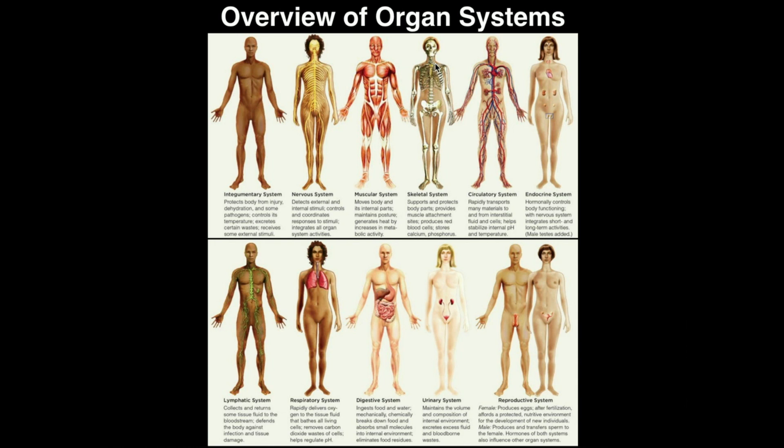The rest of these systems are covered in the second semester of this course. Here's the circulatory system, which is mainly involved in transporting nutrients of all kinds — and wastes — throughout the body. For example, the heart beats, which pumps blood through all the blood vessels to deliver oxygen and glucose to your cells in the periphery.